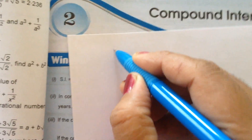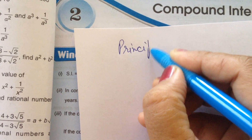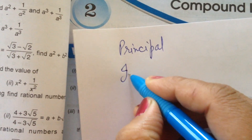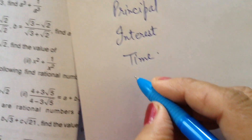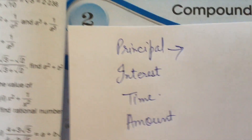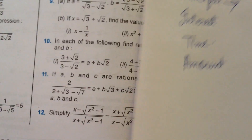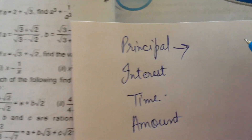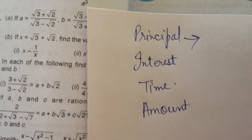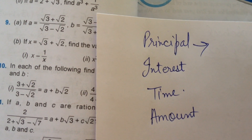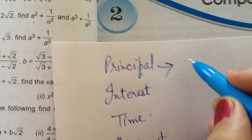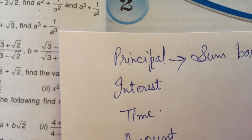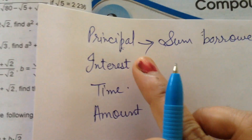So here you already know the word 'principal'. These words will come in your chapter: principal, interest, time, and amount. Suppose you are borrowing money from someone or from the bank — that money is known as principal. The sum borrowed is known as principal.